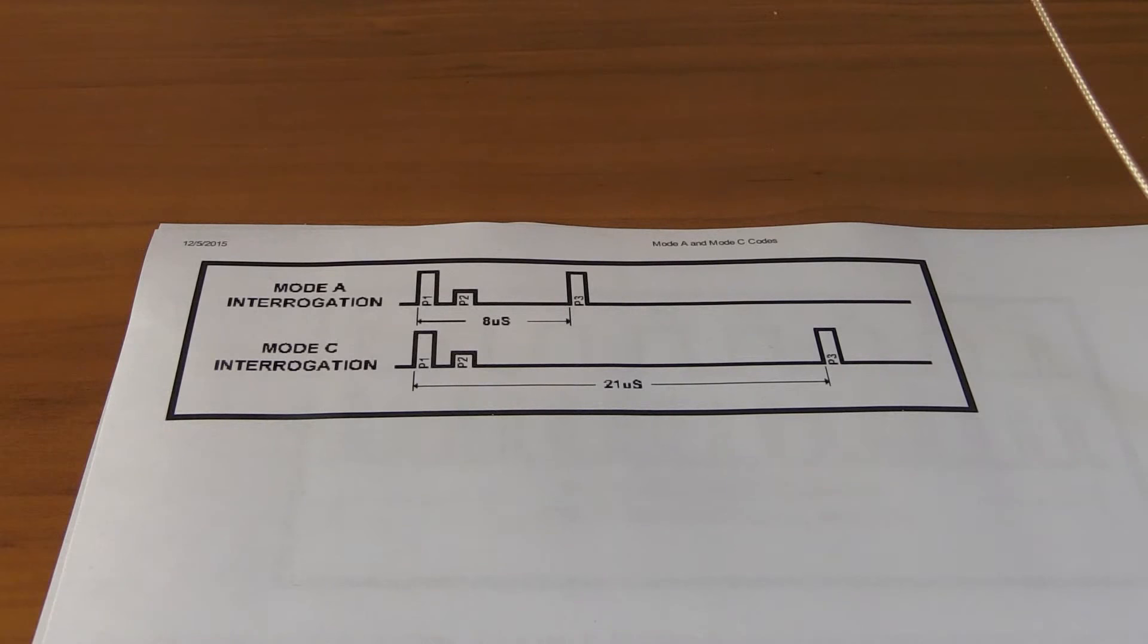So, like I said, the radar antenna sends an interrogation signal into the air, and there's two different modes. Well, there's a lot more modes, but we're going to only focus on A and C. There's mode S, which gives an aircraft identification number and a lot more info, and then there's various military modes that are for identification friend or foe, so where the aircraft identifies itself and you know it's a friendly aircraft. But we're just going to look at mode A and mode C today.